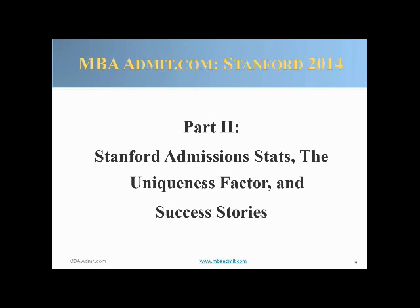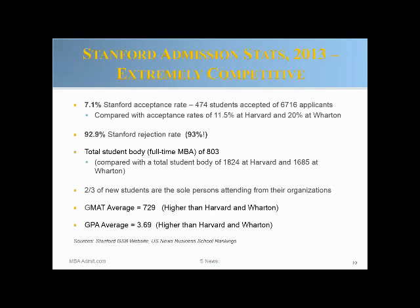Let's go into the admissions context for Stanford. In my opinion, Stanford is the hardest school to get into in terms of full-time graduate admissions. The acceptance rate is 7.1% — or put another way, 93% of all candidates applying are rejected. That's an extremely staggering figure. Compare that to Harvard at 11.5% and Wharton at 20%.